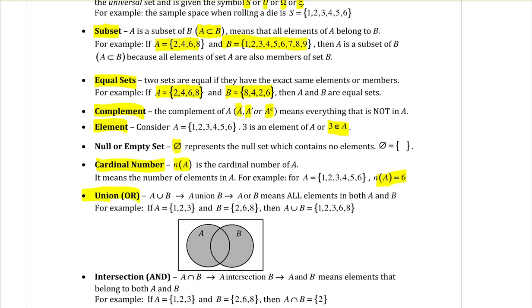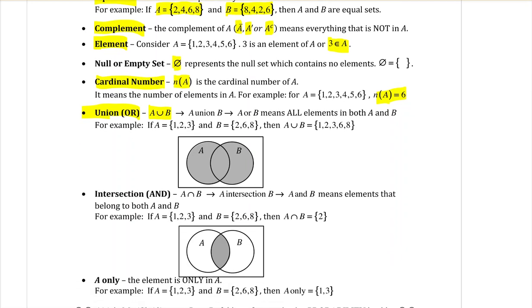Union, or the word 'or'. So if we use the notation A or B, it means A union B, A or B, they're all different ways of saying the exact same thing. It means all the elements that are in both A and B. For example, if set A is the numbers 1, 2, 3, and B is the numbers 2, 6, and 8, then A or B is going to be 1, 2, 3, 6, and 8. And you can see that here on a diagram.